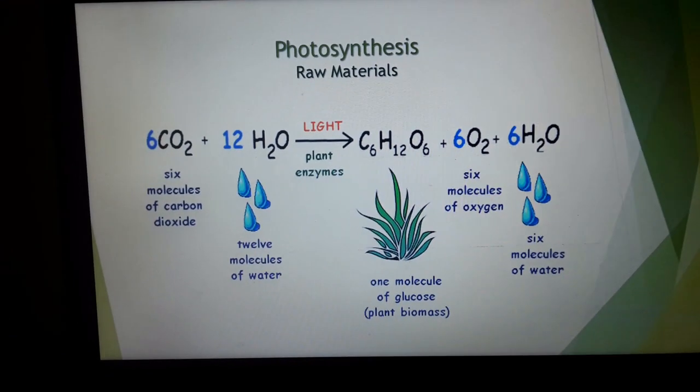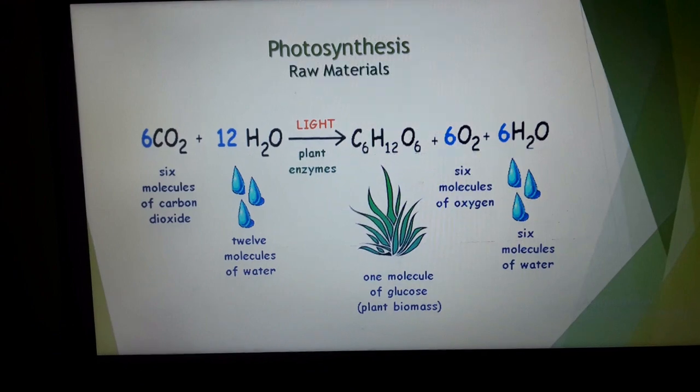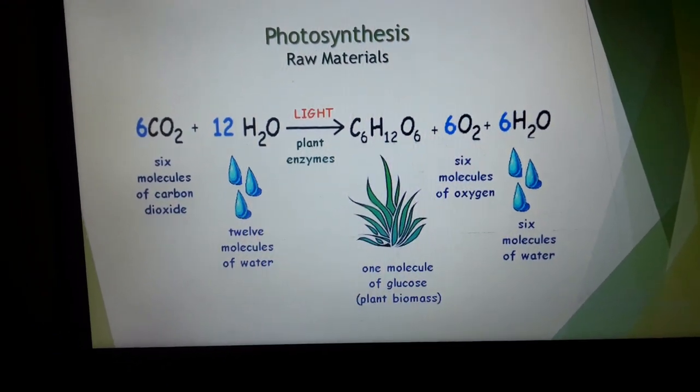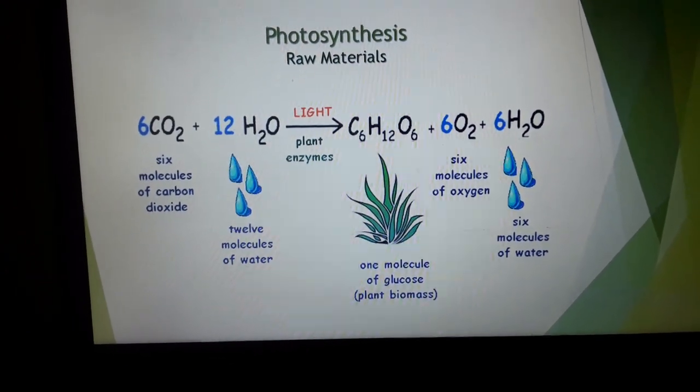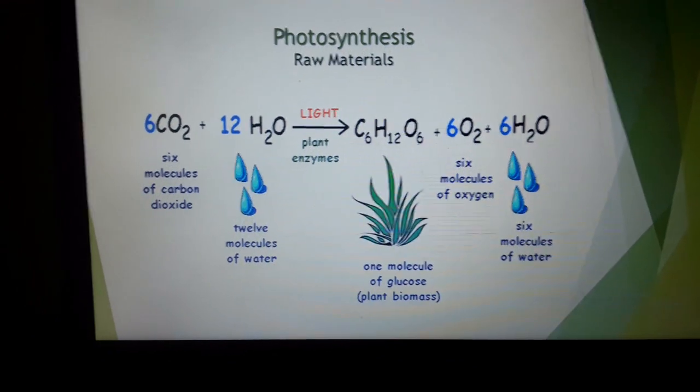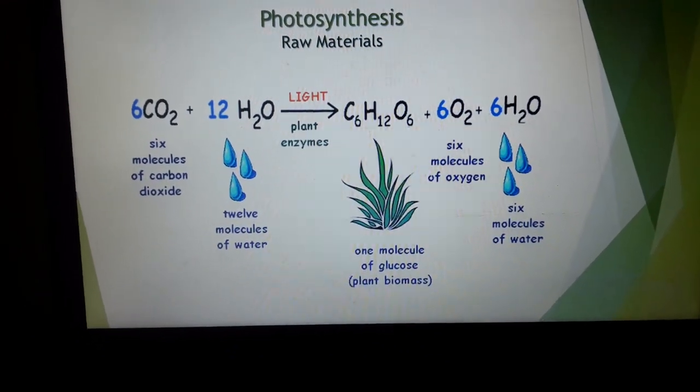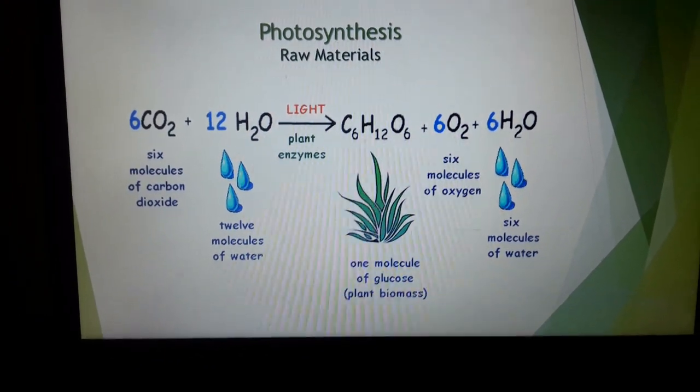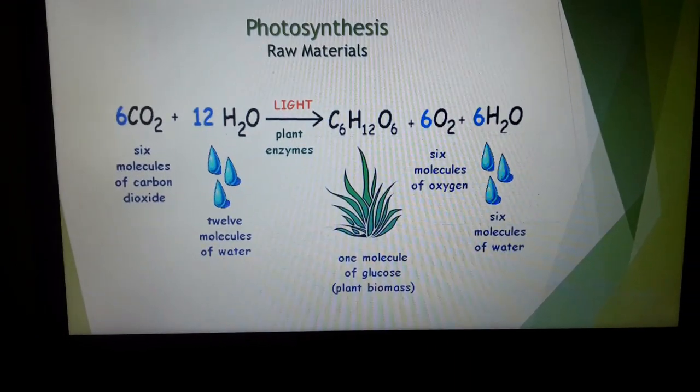This is the raw materials. CO2, H2O taken and with light energy and plant enzymes formed glucose, C6H12O6, oxygen and water. You can see the equation is balanced. CO2 taken from the environment, water through the plant, through the plant roots, they will absorb the water.